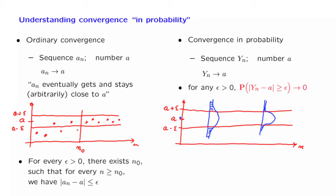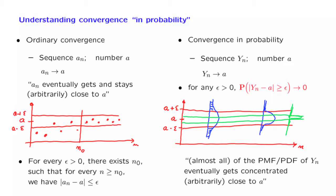This is true no matter how small epsilon is. If I take a much narrower band around a, I still want all the probability to be eventually concentrated inside that band. Of course, it might take longer — it might take a larger value of n. But when n is very large, the bulk of the distribution is again concentrated inside this narrow band. So in words, convergence in probability means that almost all of the probability mass of the random variable yn, when n is large, gets concentrated within a narrow band around the limit.